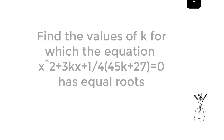Find the values of k for which the equation x squared plus 3kx plus one-fourth into 45k plus 27 equals 0 has equal roots.